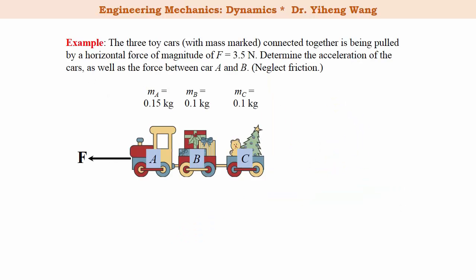Let's look at this example. There are three toy cars, the mass of each is given, and they are connected together, and they are being pulled by a horizontal force with a magnitude of 3.5 Newton. We need to determine the acceleration of the cars, and the force between car A and car B. We can neglect friction.